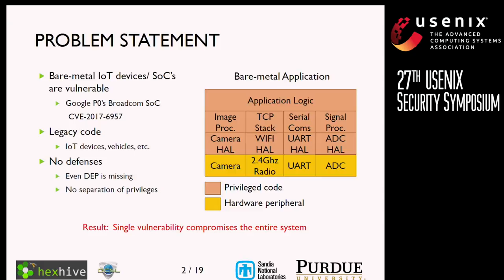Let's start with the problem statement. We're targeting bare metal embedded systems. Bare metal embedded systems operate without an operating system, with a single monolithic binary — everything is compiled into one binary. You have some application logic on top of different libraries which perform different functionality, for example a camera with an image processing library, a hardware abstraction layer, and similarly a TCP stack and Wi-Fi stack. These systems, because of the way they operate, are vulnerable. They have lots of interconnectivity and there's no isolation or privilege isolation.